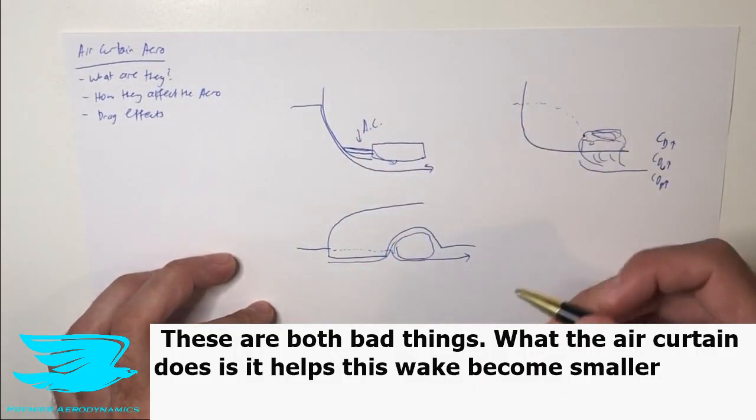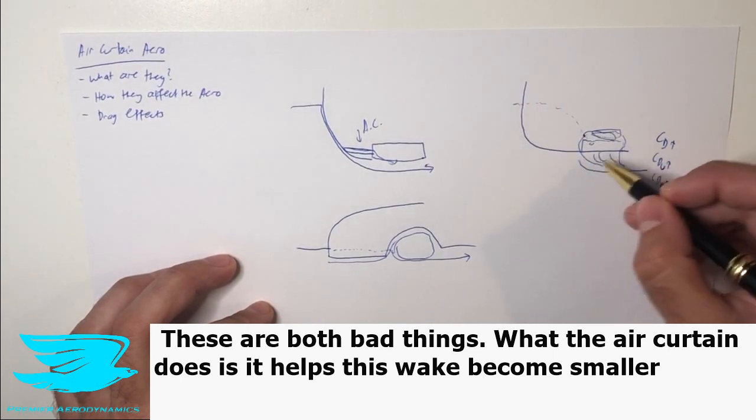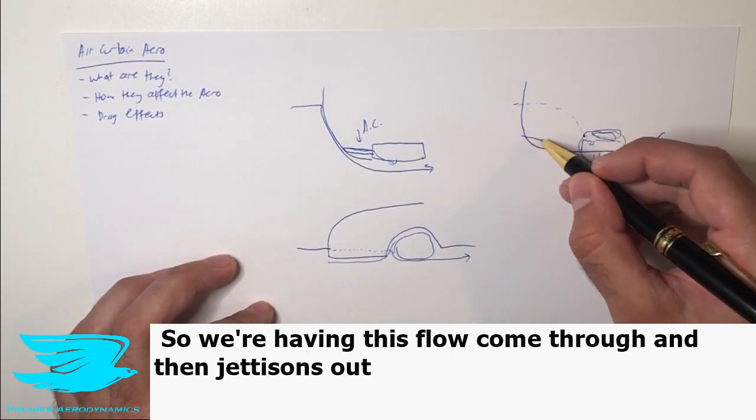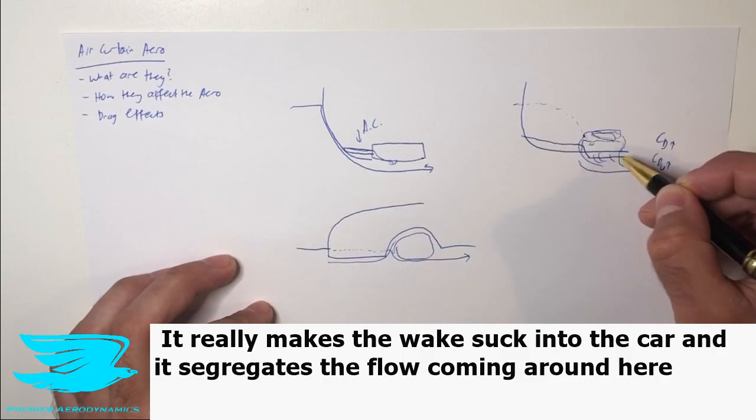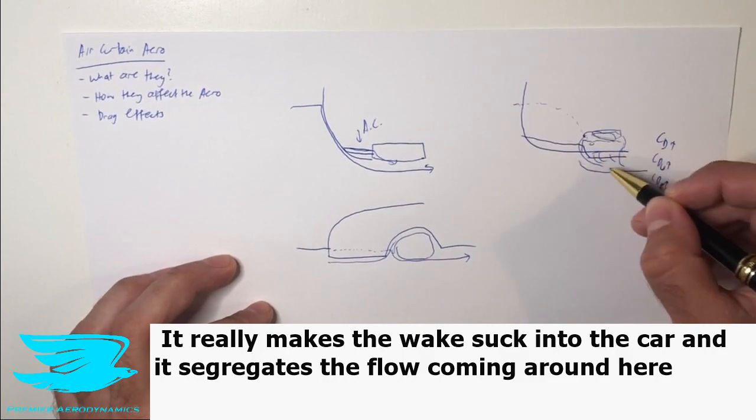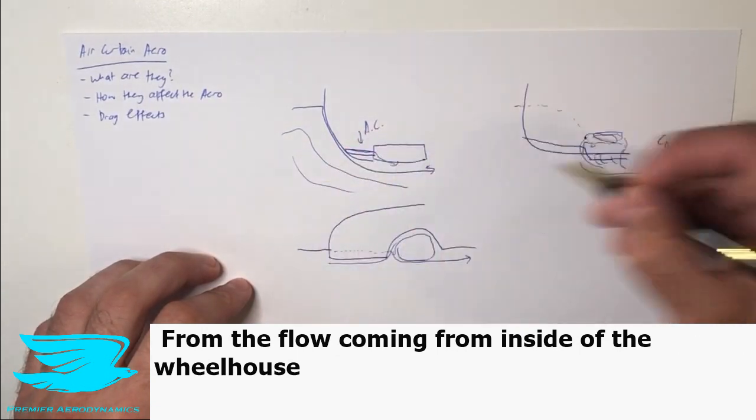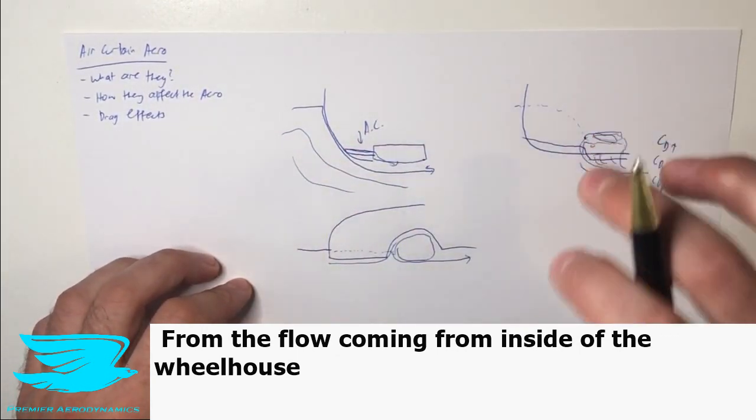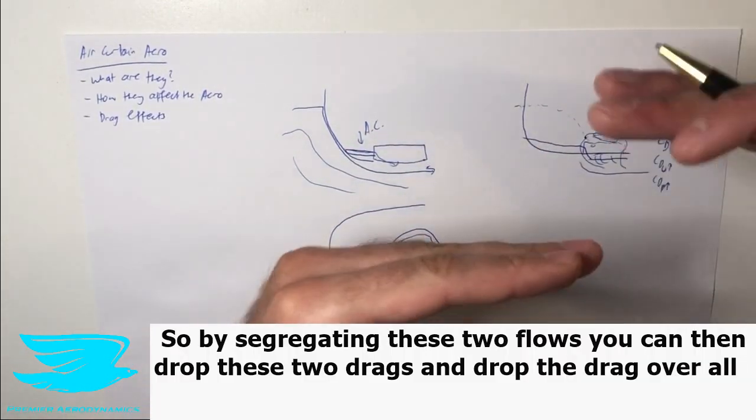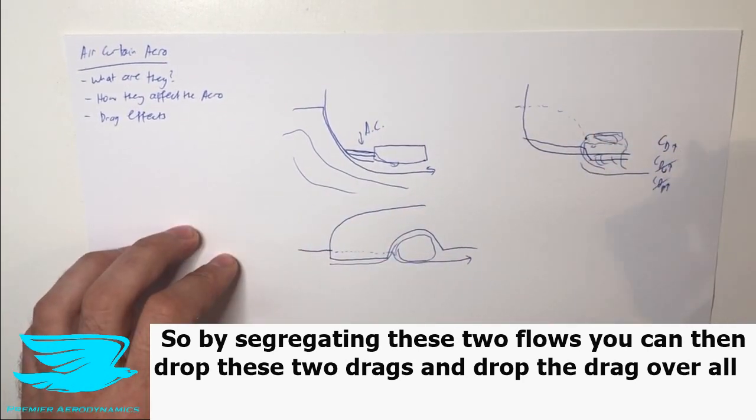What the air curtain does is it helps this wake become smaller. By having this flow come through and jettison out, it really makes the wake suck into the car, and it segregates the freestream flow—the flow coming around here—from the flow coming from inside of the wheelhouse. So by segregating these two flows, you can then drop these two drags and drop the drag overall.